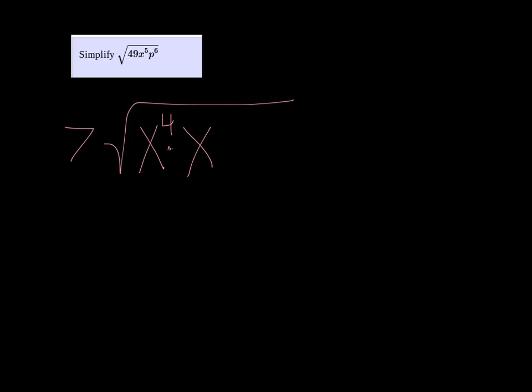That way I can pull out the x to the fourth because 4 is a multiple of 2, and p to the sixth is already a multiple of 2.